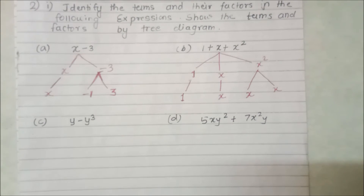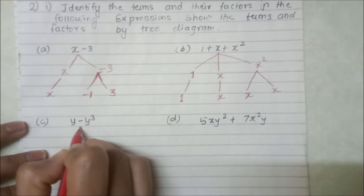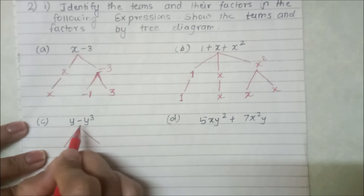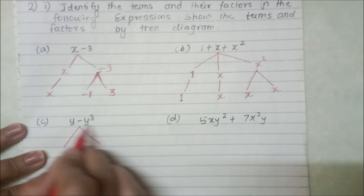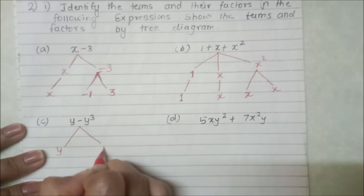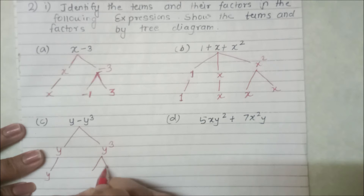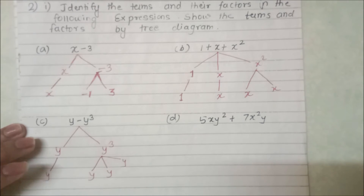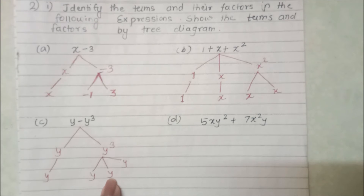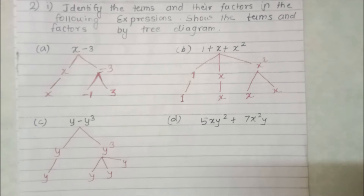Next expression is y minus y cube. There is one operation (minus), so there are two terms: y and y cube. The factor of y is just y. For y cube, the factors are y, y, and y — because y into y into y equals y cube. So y cube has three factors: y, y, y.